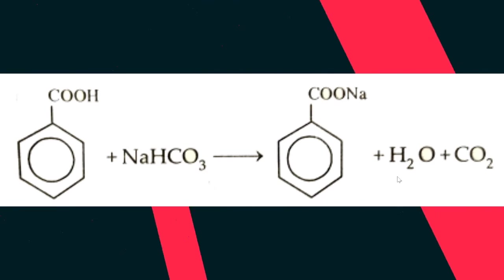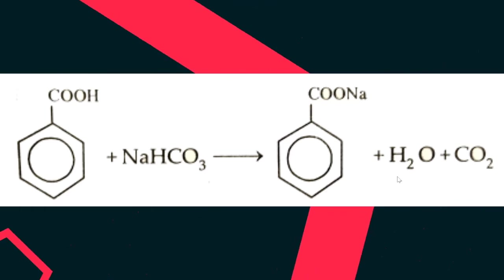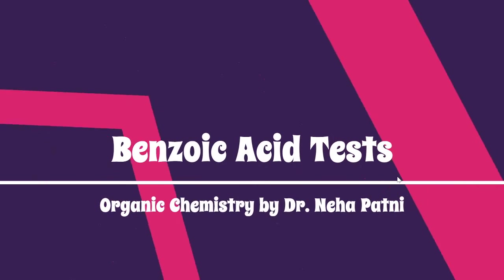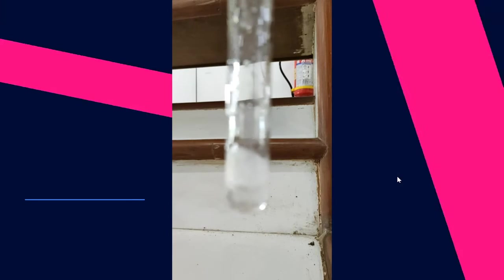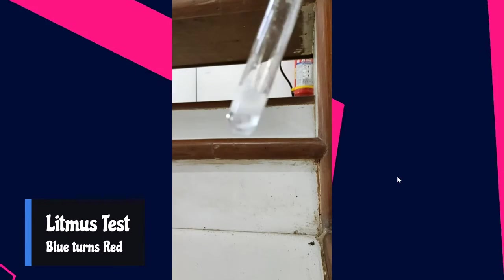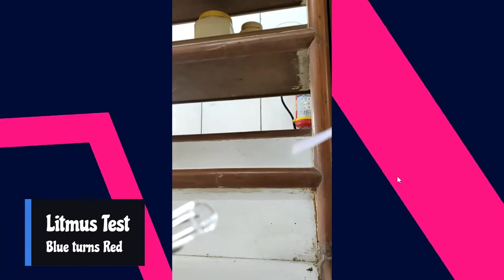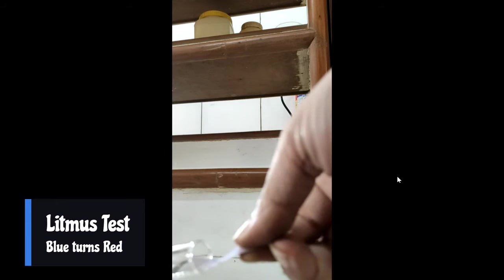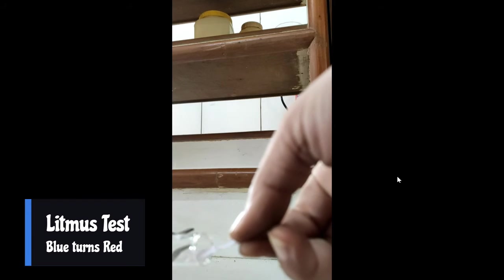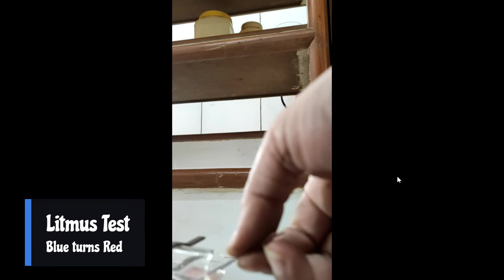This CO2 gas release confirms that there is a carboxylic acid group present in the benzoic acid. So one more test is confirmed. Now in order to check whether this acidic group is there, what you can do is take a litmus paper, blue litmus paper, and dip it in the solution of the compound.